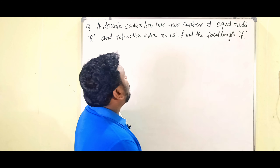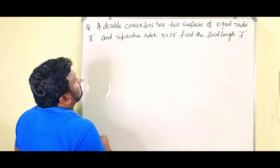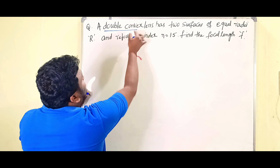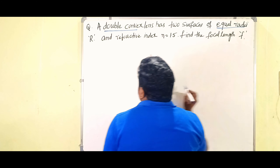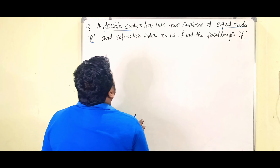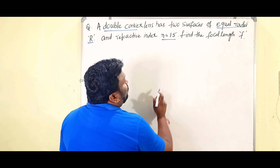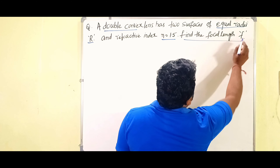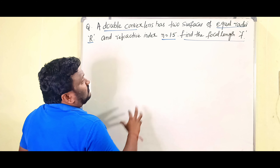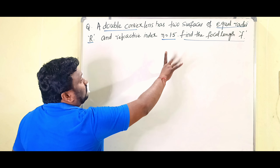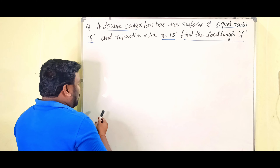The question is: a double convex lens has two surfaces of equal radii r, and the refractive index n equals 1.5. Find the focal length f of the lens.